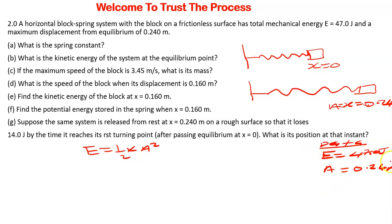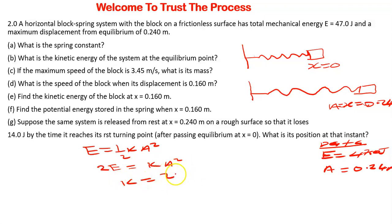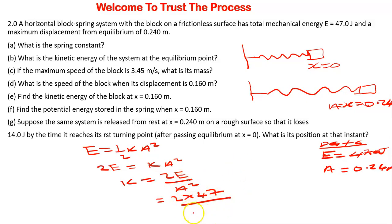We also have the amplitude, which is 0.24 meters. Using this equation, we've been given the total energy and we know the amplitude, so it is just a matter of making K the subject of the formula. Multiplying the entire equation by 2, we get 2E equals K A squared. So K equals 2E over A squared, which is 2 multiplied by 47, divided by 0.24 squared. Your answer will be in Newtons per meter — that is the spring constant.